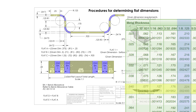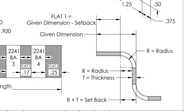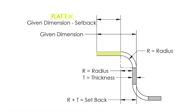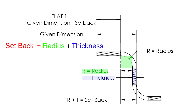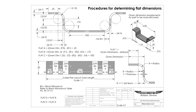Next, we simply need to calculate the length of each flat section. The normal formula for calculating the flat section is the given dimension minus setback. Setback, by definition, is the radius plus the thickness used during the bend. If all of the dimensions were given from the outside of the material to the end of the flat section, this formula would work great. However, there are many cases where you are going to have to extrapolate on this formula in order to calculate the flat section.